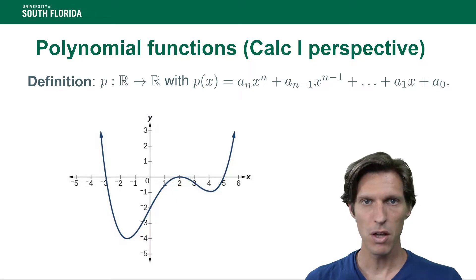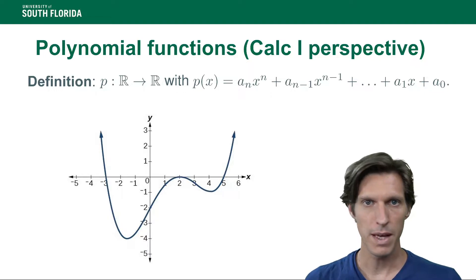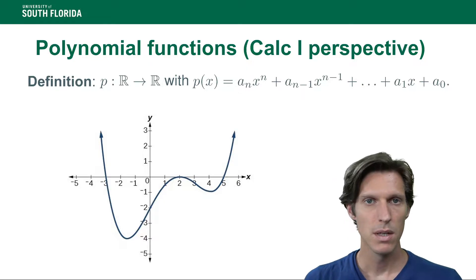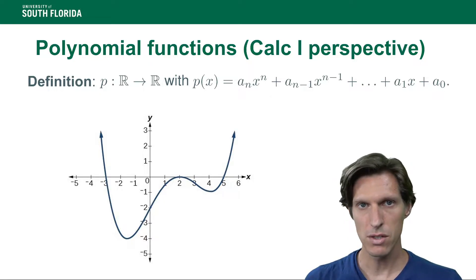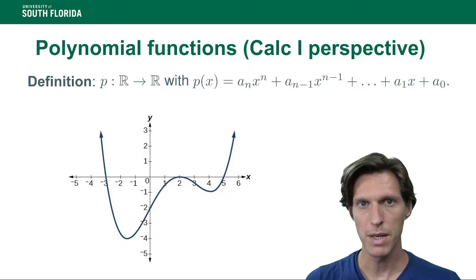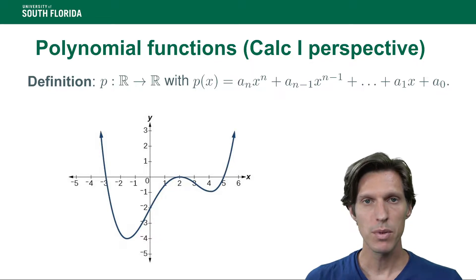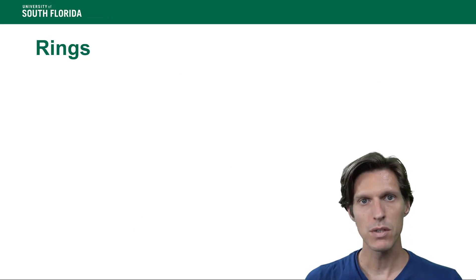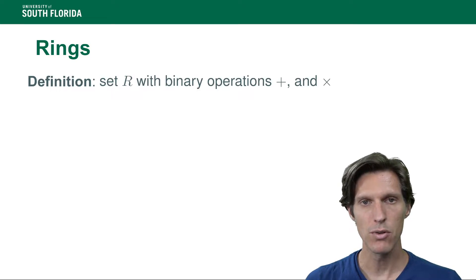Polynomials from the calculus perspective are functions of the form x maps to a sum of a_i times x^i. In calculus we are concerned about looking at the variations of such functions, checking its minima, extrema, and so on. We have a completely different, algebraic perspective on polynomials here. To get to that, we need to define an abstract algebra notion of a ring.